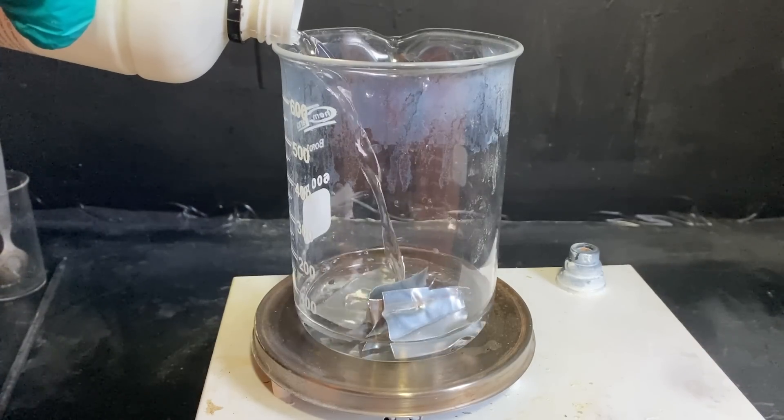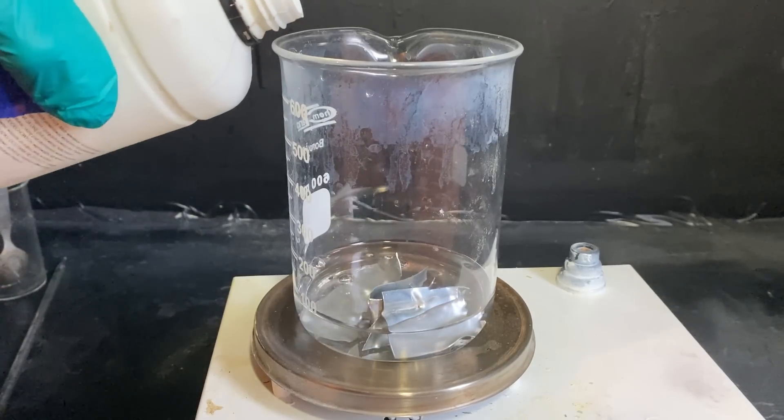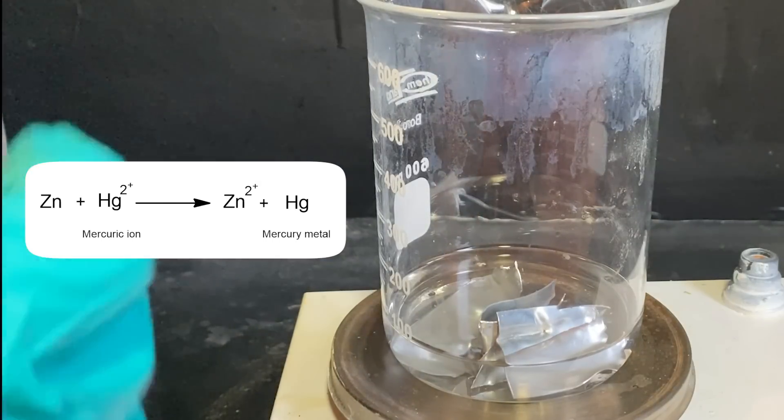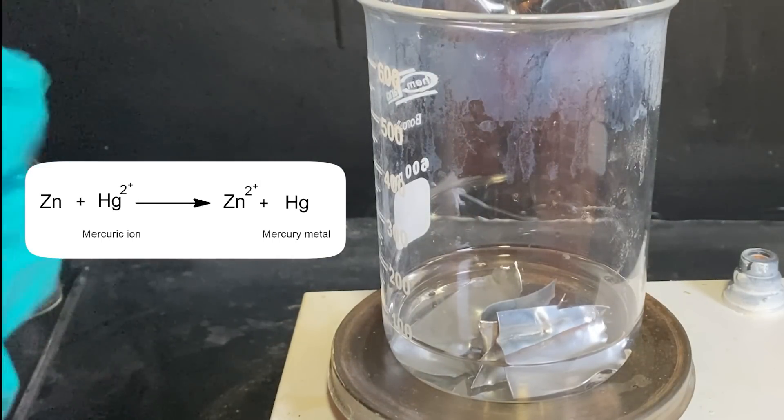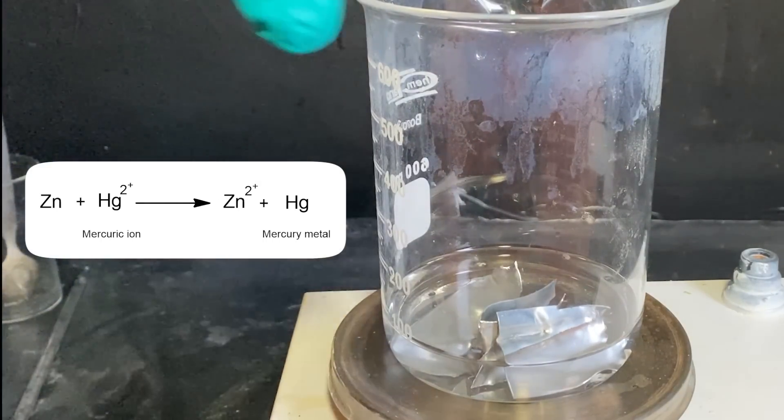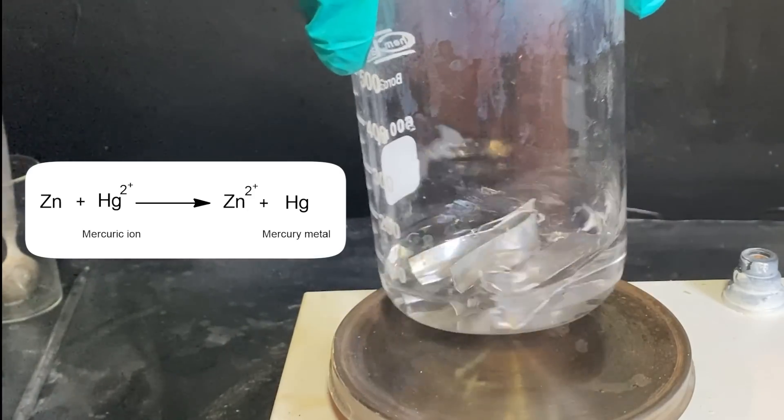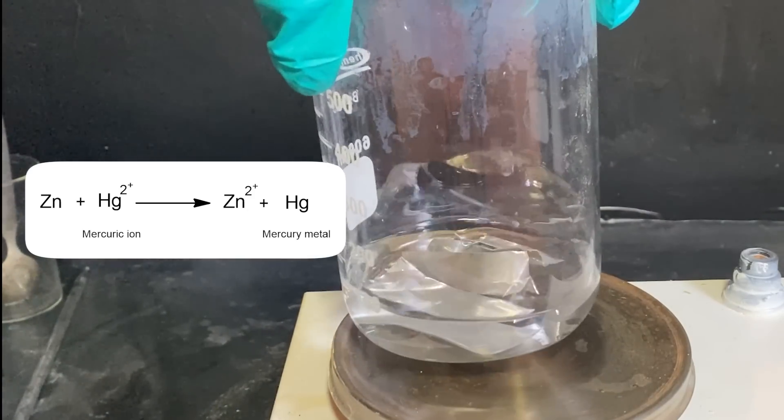What's happening here is that mercury is getting liberated from the solution by the zinc. Zinc is more reactive than mercury, so it takes mercury's place in the solution. Meanwhile however, the exact opposite is happening, and the mercury deposits on the surface of the zinc. The mercury on the surface of the zinc forms an amalgam.